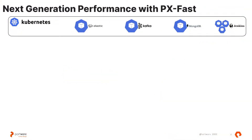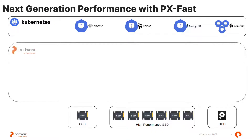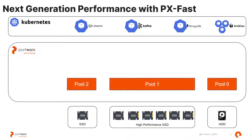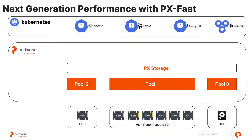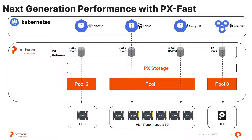Many of you might already be using applications within Kubernetes that require persistent storage such as Mongo or Kafka. You might use Jenkins for your CI/CD pipelines and things like Elasticsearch. You probably have SSDs or spinning disk on your hyperconverged servers or cloud instances running your Kubernetes worker nodes. Portworx creates pools of storage from these backing storage devices and creates a Portworx storage cluster from which we can carve out persistent volumes within Kubernetes and provide file systems or block devices to your applications.